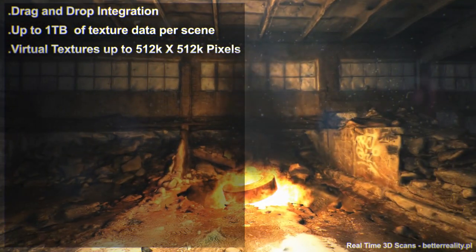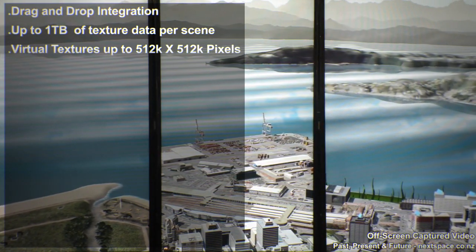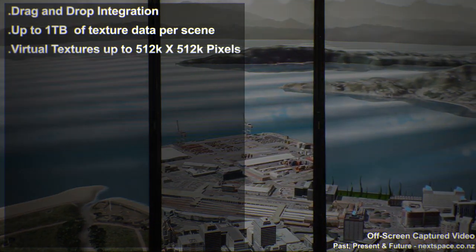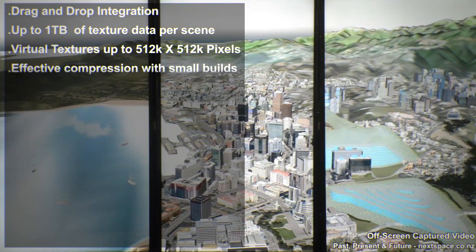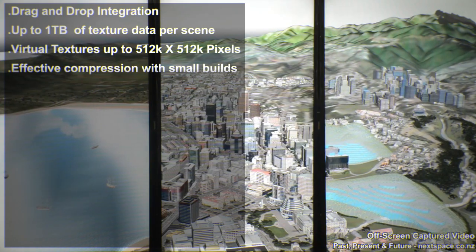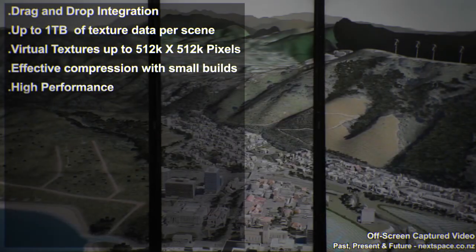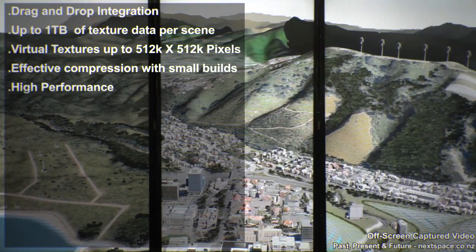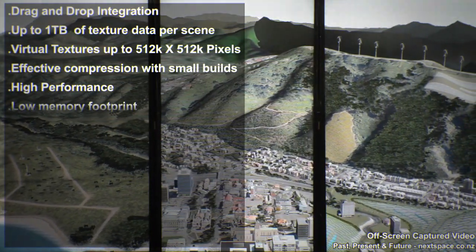Forget 4K textures — those kind of limitations are a thing of the past. It provides efficient variable bitrate texture compression for your virtual texture. You will be able to achieve compression ratios above average when compared with normal DXC compression, resulting in up to 4 times smaller build sizes while preserving quality and detail.